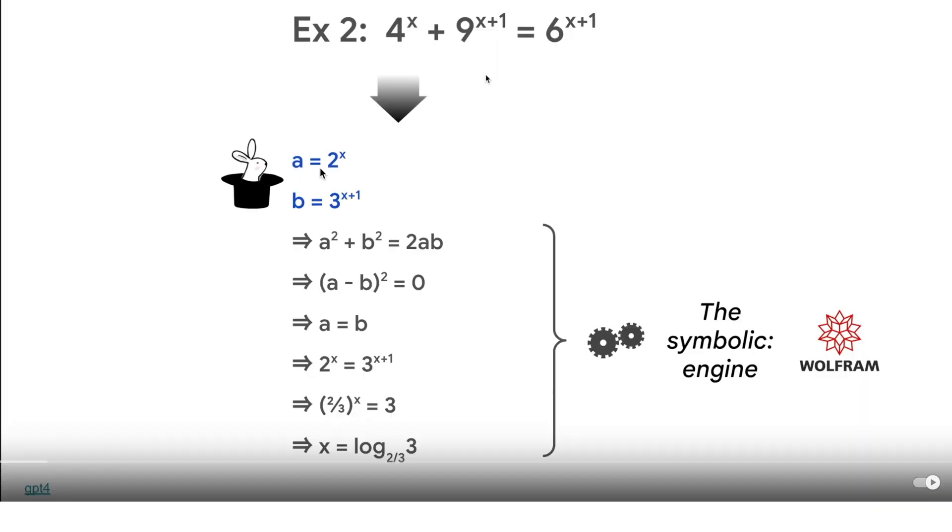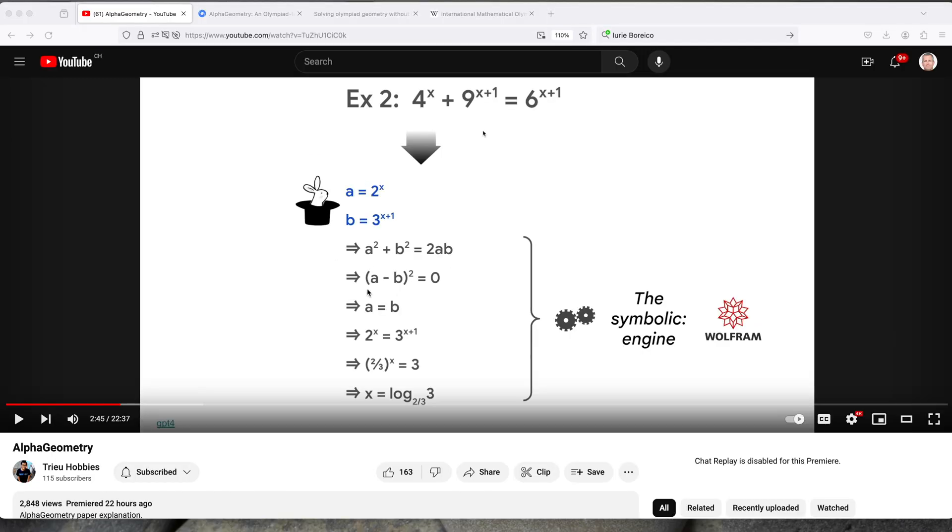So imagine that A is equal to 2 to the x power, and now B is equal to 3 to the x plus 1 power. Now, when you use this A and B, you can transform this scary-looking equation into something like this. A squared plus B squared equals 2AB. Then it turns into this really simple equation. You can see A is equal to B. You plug in the numbers, and then you get your result. Current symbolic engines like Wolfram can easily do this.